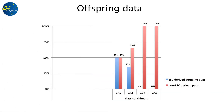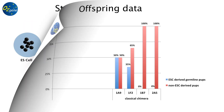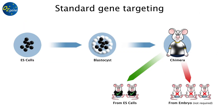With this method you usually get more offspring derived from the host, which are shown in red, and less if any offspring derived from the ES cells, which are shown in blue. So how is GoGermline different?